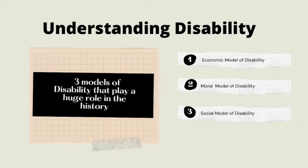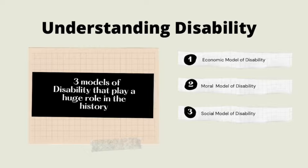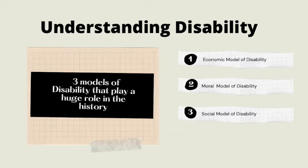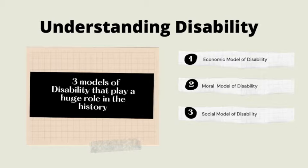The next one is the moral model. This one is also self-explanatory — it basically refers to the attitude that people are morally responsible for their own disability. This carries a lot of controversial conversation, and we'll jump into that.